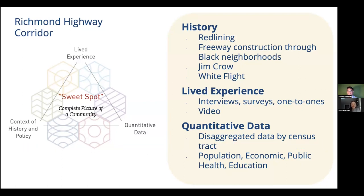We also use quantitative data, and that is disaggregated data, usually by census tract. We like to use disaggregated data — which just means broken out into smaller pieces — because oftentimes when you have lumps of data, things get lost in there. If you want to be specific about the neighborhood you're in, it's really important to look at census tract data instead of looking at, for example, metropolitan statistical area data, because that encompasses a lot and you're going to miss the differences and disparities.